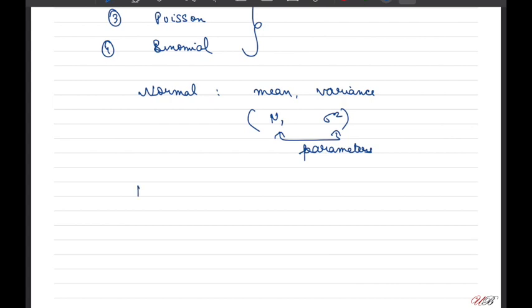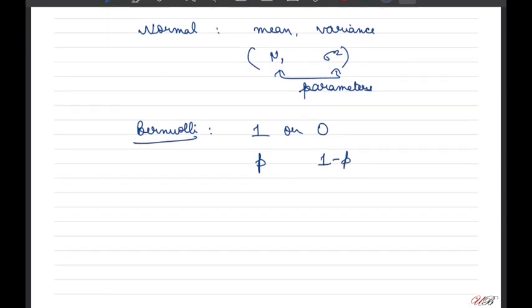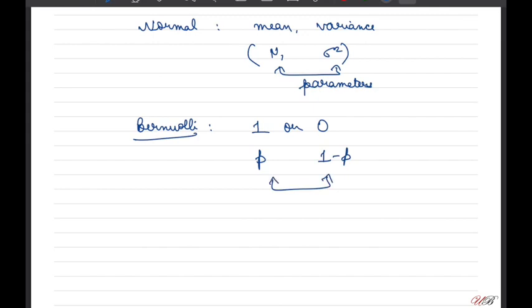Similarly, if we talk about Bernoulli, as you know, two outcomes are possible — one is yes and one is no, typically heads and tails, or whether it is raining outside, yes or no. This has outcomes 1 or 0, and we need to determine the probability associated with 1 and 0, that is p and 1 minus p. This is a univariate parameter distribution, as we need to determine only one parameter.